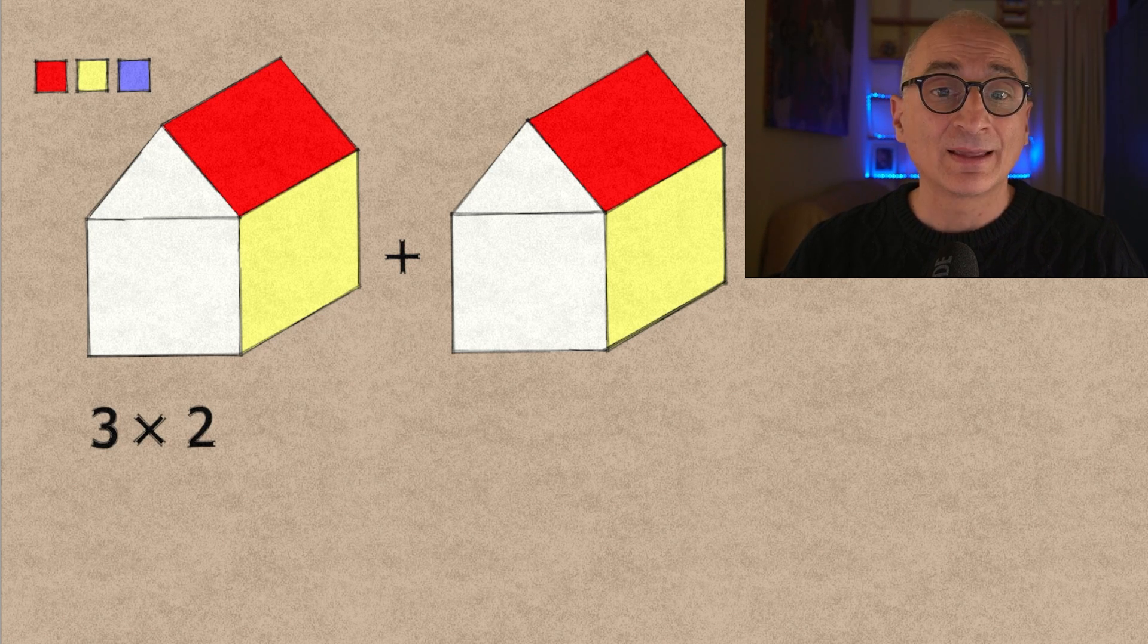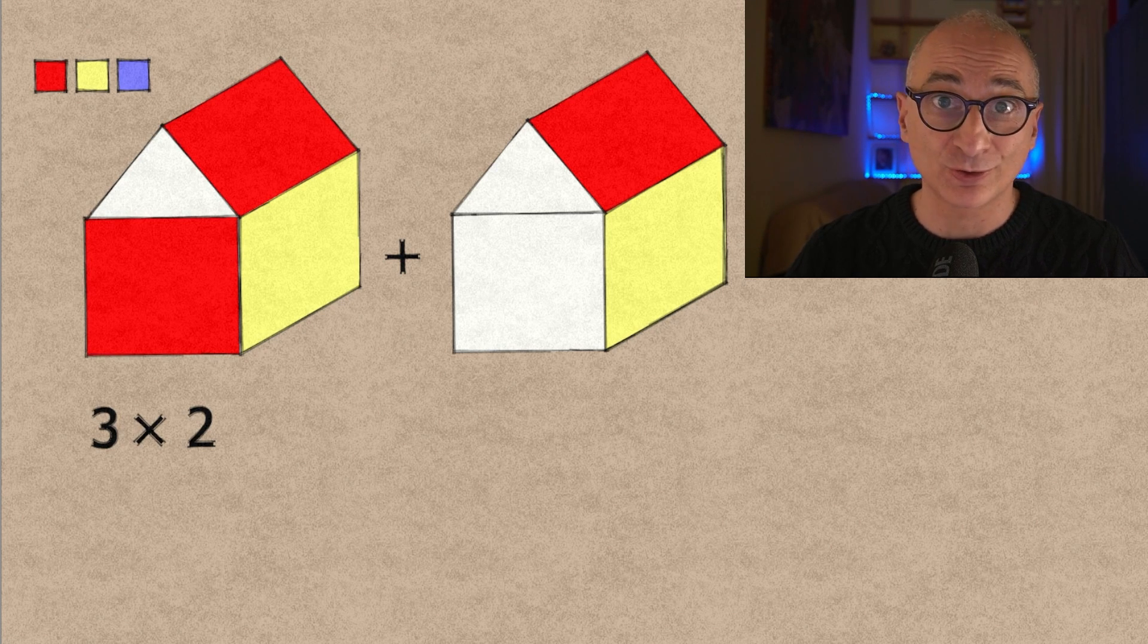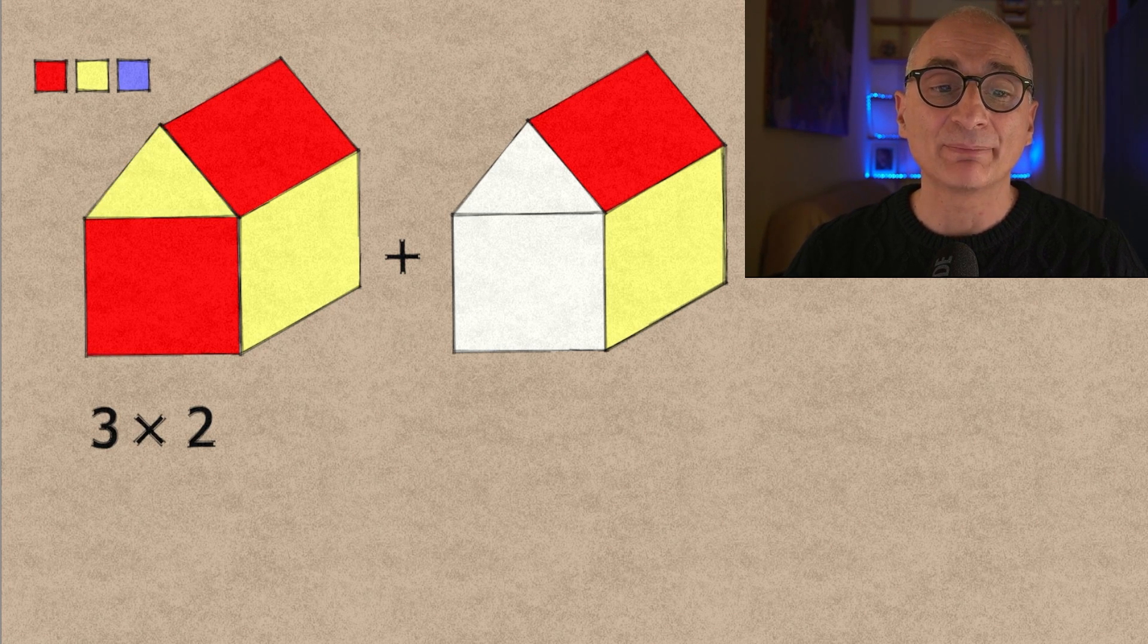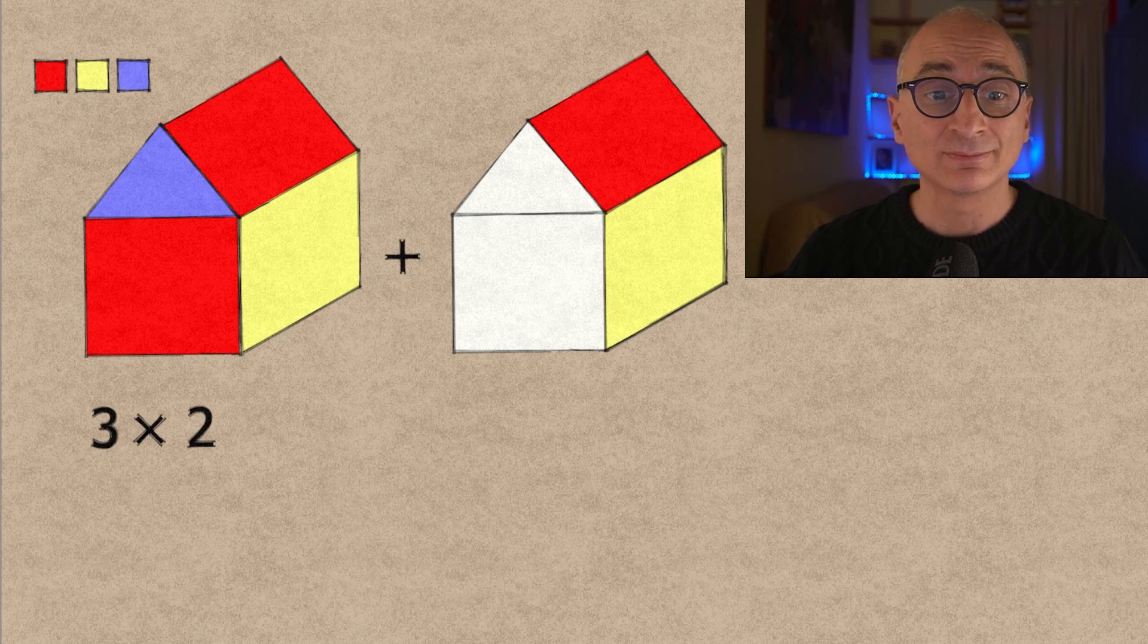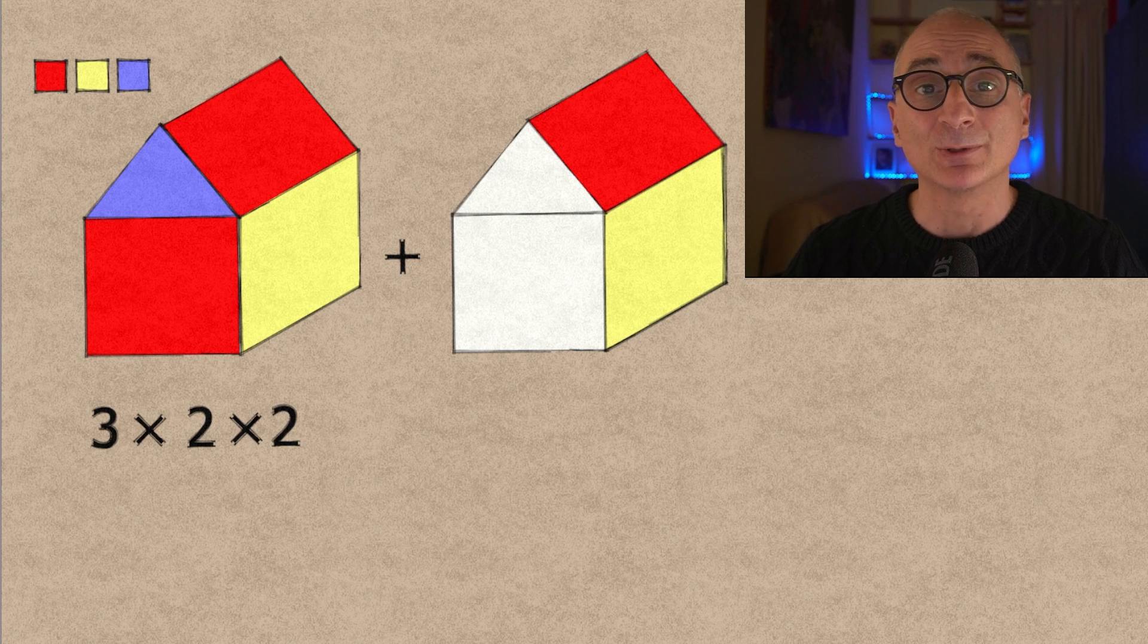So first case the front wall has the same color of the roof. So it's red, no choice there. And the triangle can be yellow or blue because it must be different from red. So we have two choices and we multiply by two.